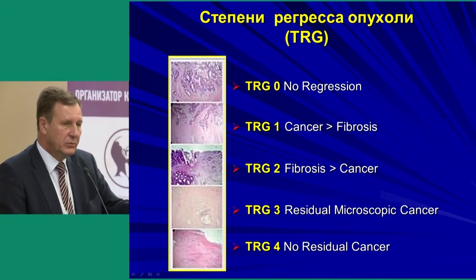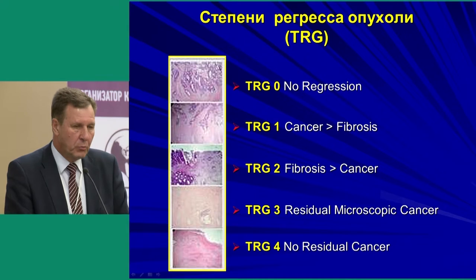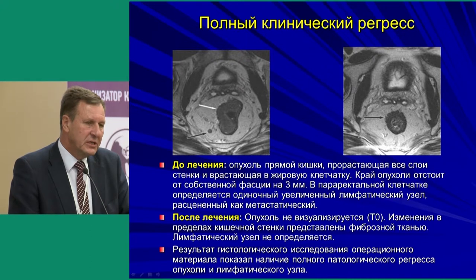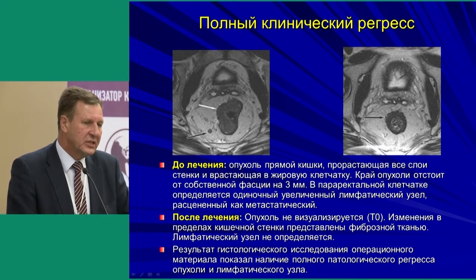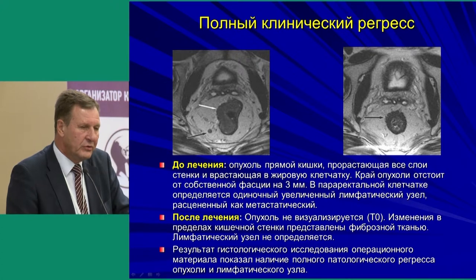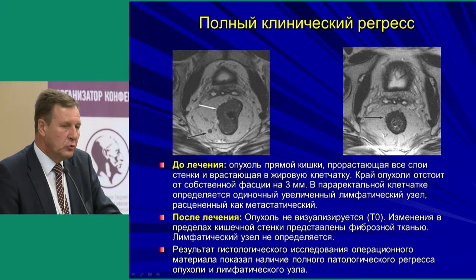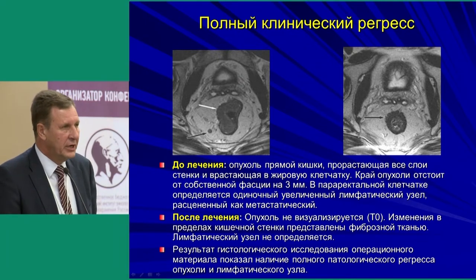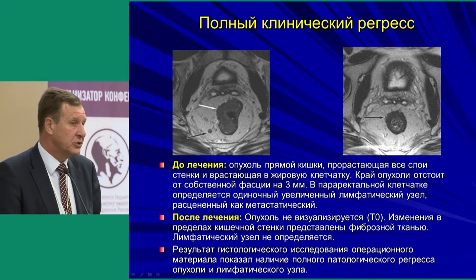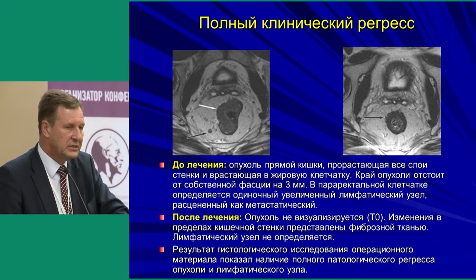Morphologically, tumor regression grading appears as: cancer more than fibrosis, more cancer than fibrosis, residual macroscopic cancer, and finally no residual cancer. Our clinic data shows a complete clinical regression case: prior to treatment, rectal cancer grew through all walls into surrounding fat, with tumor margin 3mm from the proper fascia, and solitary enlarged lymph nodes assessed as metastatic. After chemo-radiation and an 8-week break, no tumor was visualized on MRI — T0 changes in the intestinal wall presented with fibrous tissue, no lymph nodes. Surgery confirmed complete pathological regression of tumor and lymph nodes.